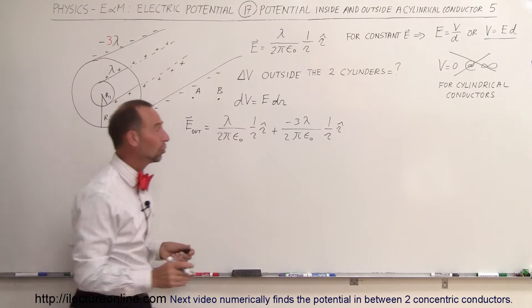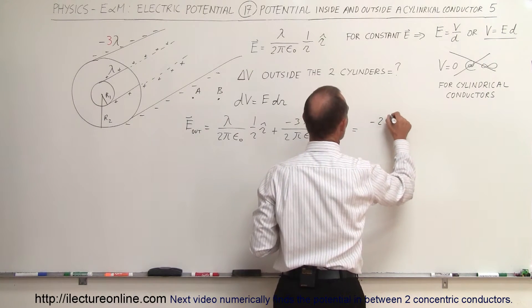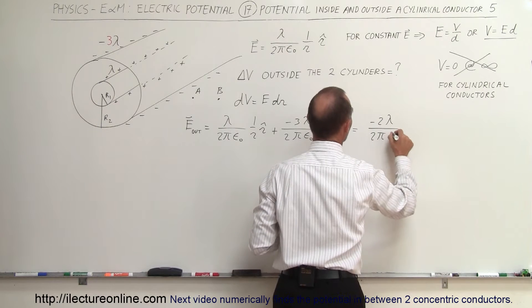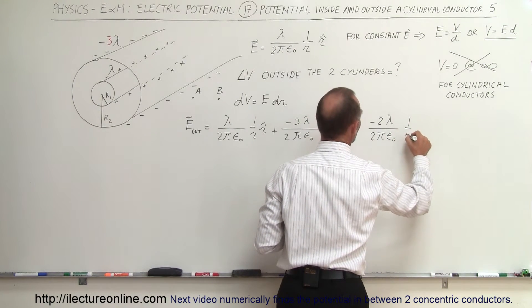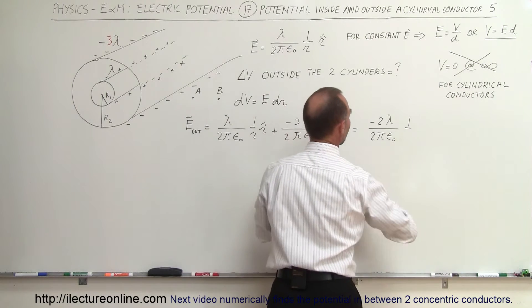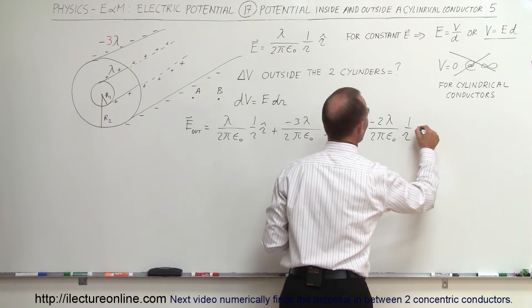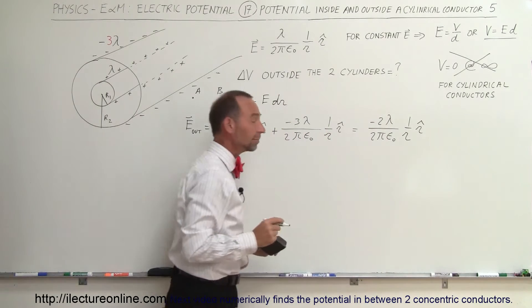So the sum of those two will then be minus 2λ divided by 2πε₀ times 1 over r, that's an r, supposed to be an r, let me try that again, there we go, times the unit vector.